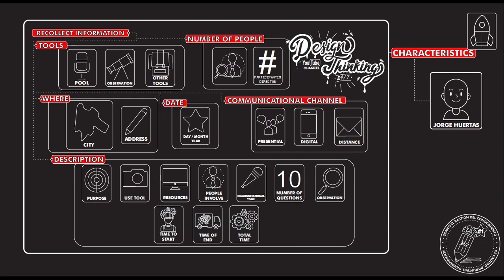As a final part, you have to put all the elements of description. If you realize that you need to put something else besides the elements on the screen, it's very important to put that. So very important to put the purpose — what was the purpose of the recollection of the information? Which tools you used, which resources you used, if you got any incentive for participation, how many people were involved — not just how many people you surveyed, but also the people that helped you collect the information. What was the communication tone? That is very important because it's not the same talking to a young person as to an older one.